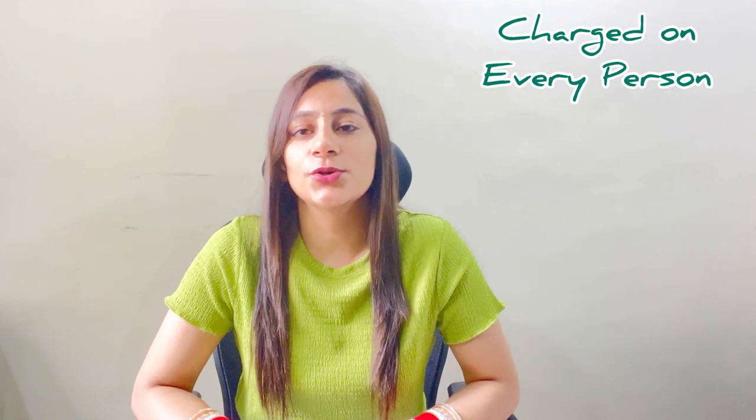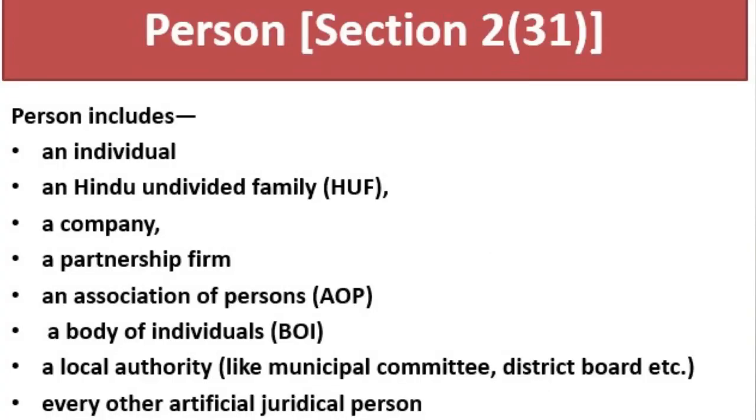Number 4: it is charged on every person. Now what does 'person' mean here? It is not just an individual. It includes other entities — Hindu Undivided Family (HUF), companies, Association of Persons (AOP), Body of Individuals (BOI), partnership firms, and Limited Liability Partnerships (LLPs). The central government charges tax not only on individual income but on the profits of all these authorities.